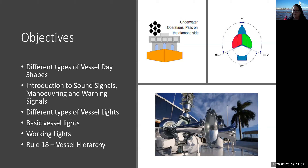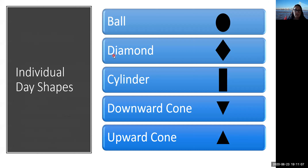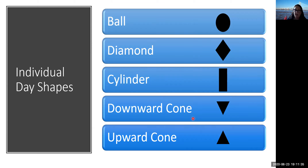Let's kick off with the individual day shapes. Day shapes are relatively straightforward because no matter what they are, they are made of these five things: a ball shape, a diamond shape, a cylindrical shape, a downward cone, and an upward cone. All we do is put them together in conjunction with each other — it is these five basic shapes that we are going to start looking at.